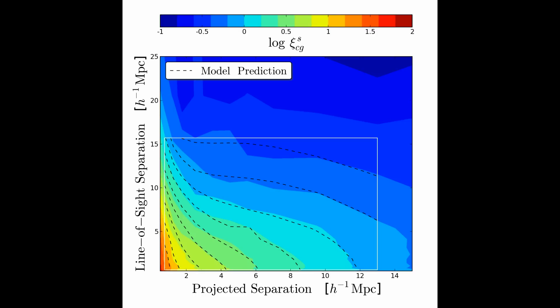The dashed contours here show the predicted ξ_cgs from our best fit kinematics model for the highest data mass bin clusters, and it agrees with the measurements very well.